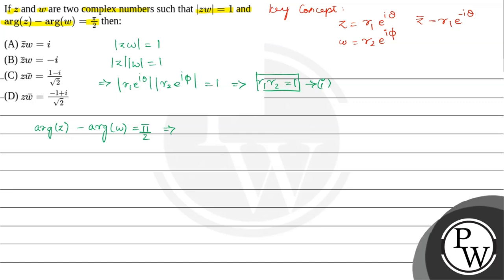Now from the options, we have to find Z bar into W.